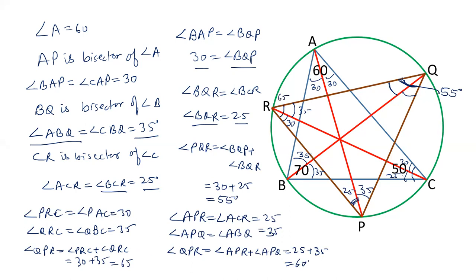So angle Q is 55 degrees, angle P is 60 degrees, and angle R is 65 degrees. This is how we can solve this question. Now as I mentioned earlier, I will give you the shortcut for this.